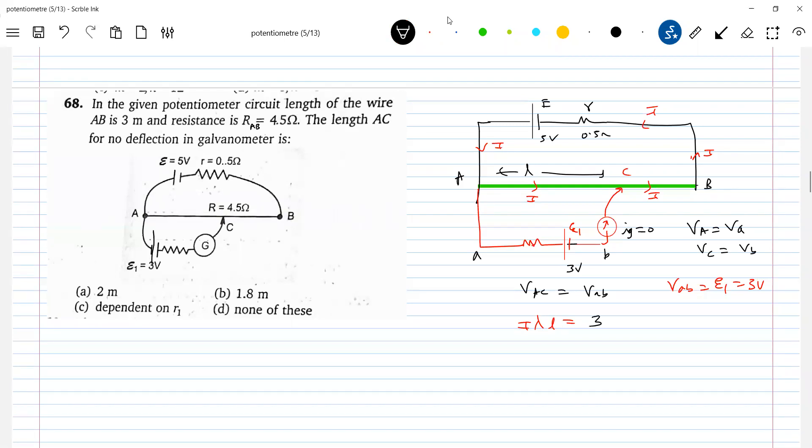Now we don't know I. How to bring I? So lambda is what? I equals E by RAB plus R lambda. Lambda resistance is RAB by total length.